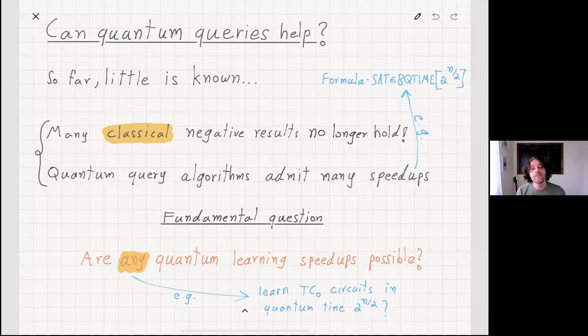This raises a fundamental question: are quantum learning speed-ups possible at all, of any sort? For example, something that would be very interesting is, can we learn TC zero circuits, these threshold circuits as I mentioned before, in quantum time, which is nearly exponential, but it's two to the n over two?